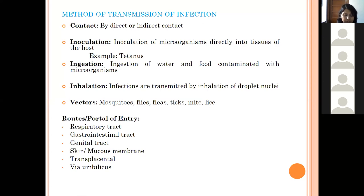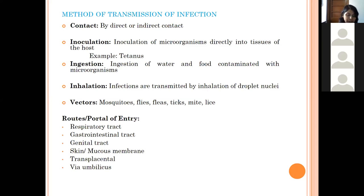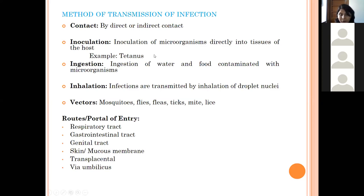Transplacental infection occurs when the fetus gets infected through the placenta, resulting in death, stillbirth, or abortion — as seen in campylobacteriosis and brucellosis. Via the umbilicus, if the navel is not properly cared for after birth, infection may occur — lambs are especially susceptible. Bacteria like Erysipelothrix, Salmonella, and E. coli can enter through the umbilicus and cause disease.